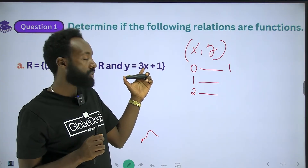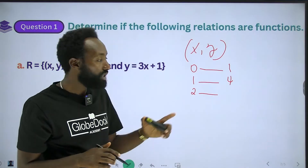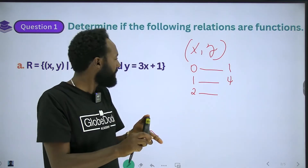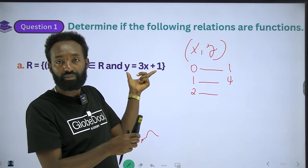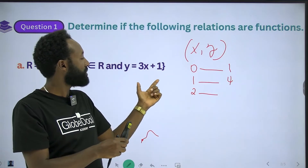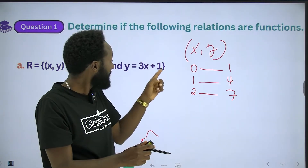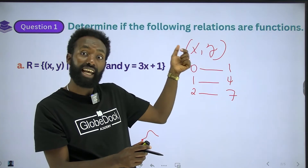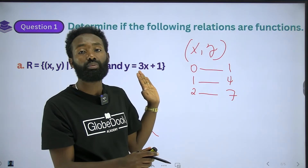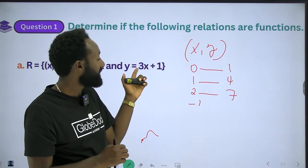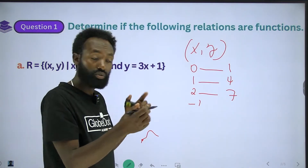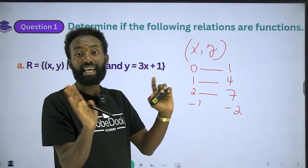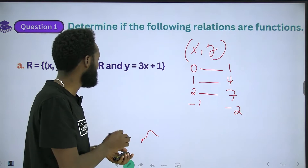If x is equal to 1, then 3 plus 1 is equal to 4. If x is equal to 2, then 6 plus 1 is equal to 7. We can also use negative values. If x is negative 1, then negative 1 times 3 is negative 3, plus 1 equals negative 2. If y is equal to negative one, we still get one unique y value. Therefore, this is a function.